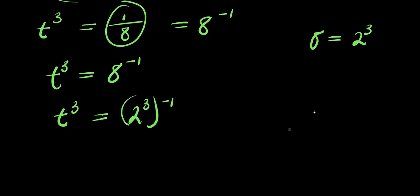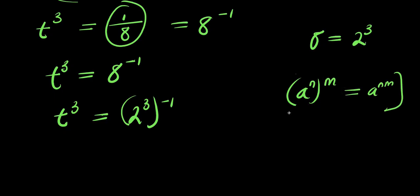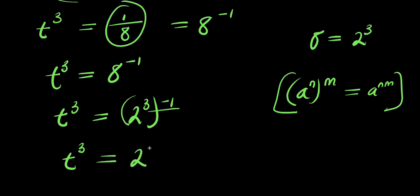And from here, we make use of this identity: a to the power n, all to the power of m, equals a to the power n times m. So if you multiply this out, you have t to the power 3 equals 2 to the power negative 3. From here you can easily get the real solution, but rather we are going to make use of a different approach.